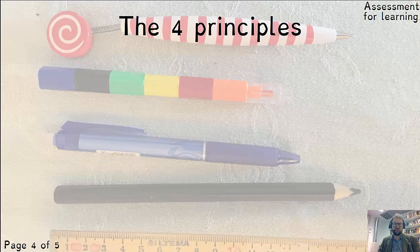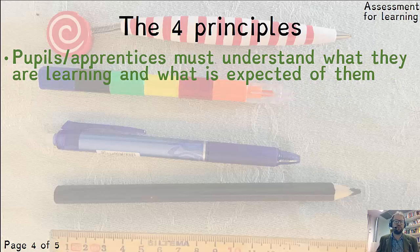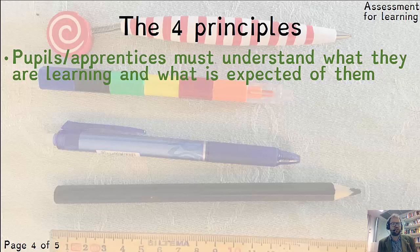The four principles that steer the assessment practices are firstly that pupils and apprentices must understand what they are learning and what is expected of them. This is both a legal and a pedagogical reason. It's unfair to put out a test and only afterwards explain to the pupils what you wanted them to do. If you want them to do something, then your explanation needs to be sufficient before you set them going and doing stuff.